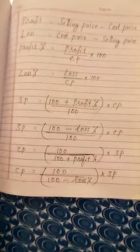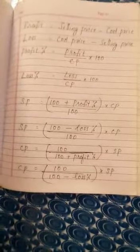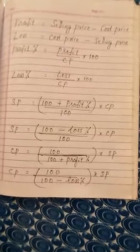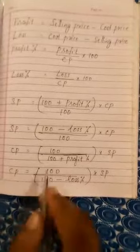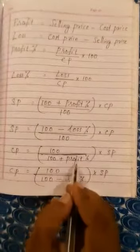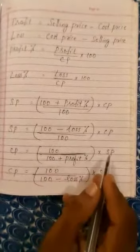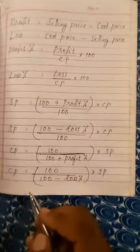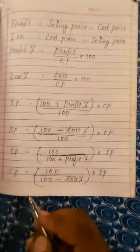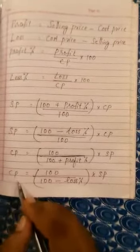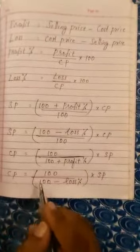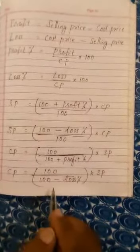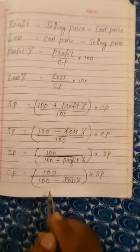If selling price and profit percent are given, then cost price is equal to 100 upon (100 plus profit percent), multiplied by selling price. If selling price and loss percent are given, then cost price is equal to 100 upon (100 minus loss percent), multiplied by SP.